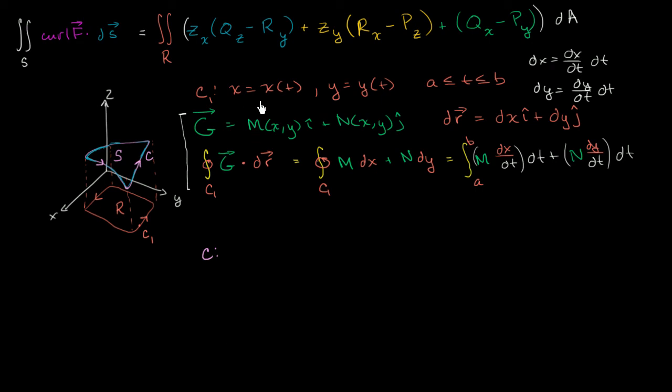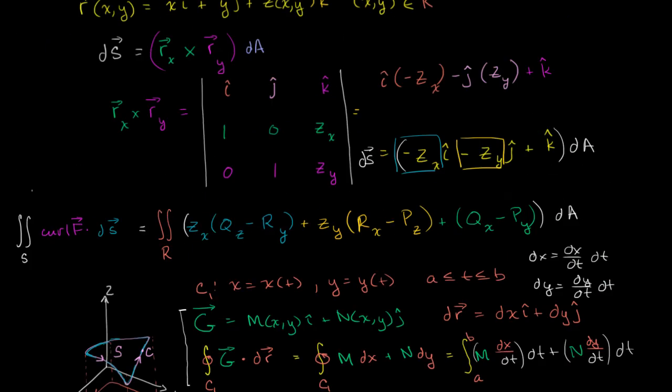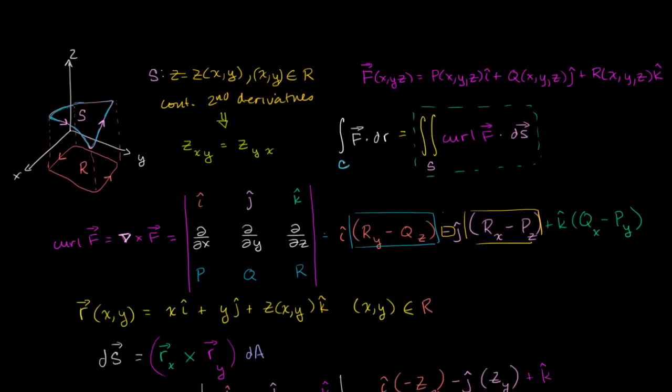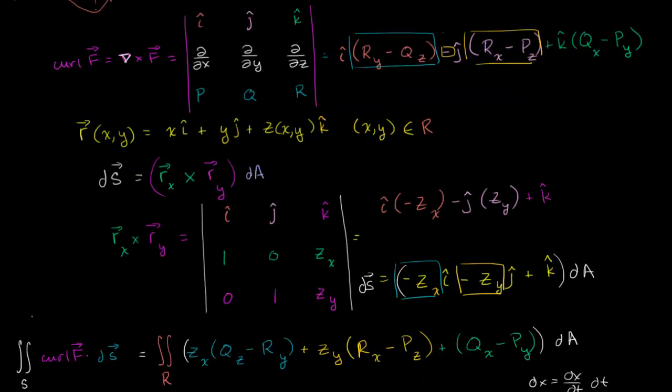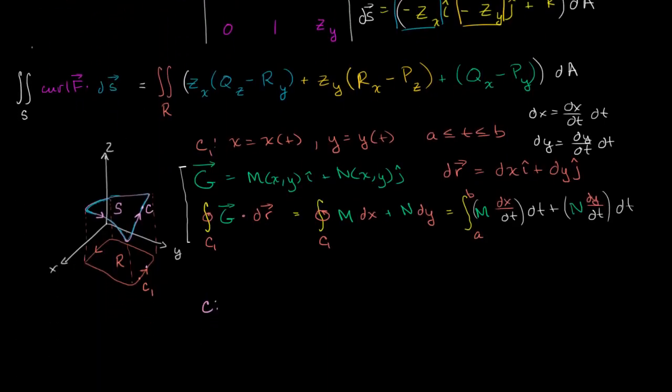Well, for C, the parameterizations for x and y can still be the exact same thing because the x and y values are going to be the same. The x and y value here is the exact same as the x and y value there. The only difference is we now have a z component, and we define it way up here. Our z component is going to be a function of x and y.